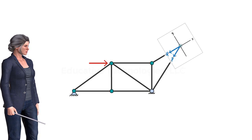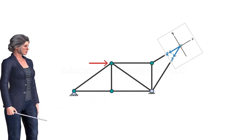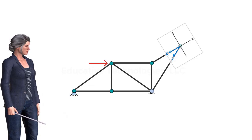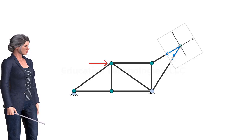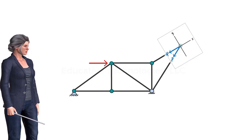Note that now only one of the forces has a component along the Y axis — P is the only force with a Y component. And since the sum of the forces in the Y direction must be zero, P must be zero. And if P is zero, given that the sum of the forces in the X direction must also be zero, we can conclude that Q must be zero too. That is, neither member carries any force. Let's simplify the truss by removing the two zero force members.